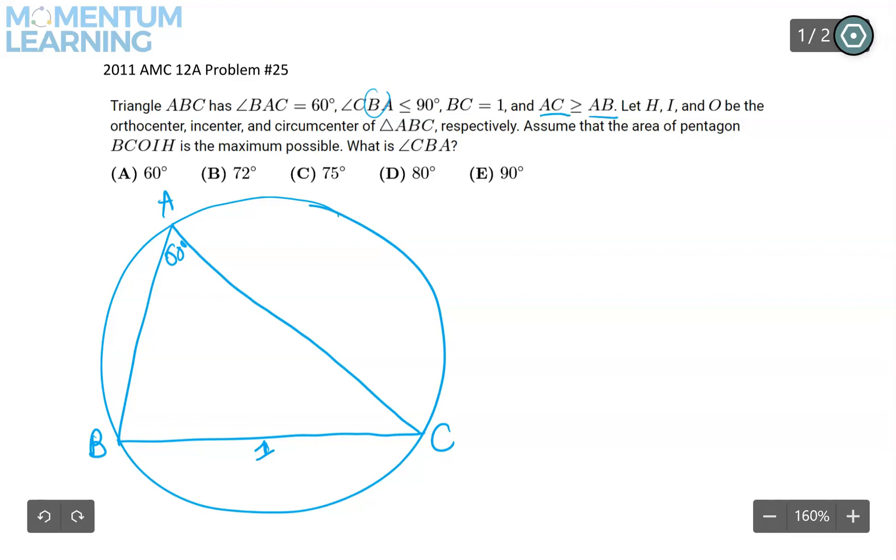But AC is greater than AB suggests that angle B is greater than angle C. You can either use law of sine, for instance, to establish that this is the case. All right, so the three points H, I, and O, the orthocenter, incenter, and the circumcenter. Let me try to eyeball them.